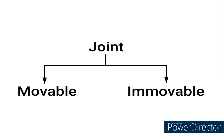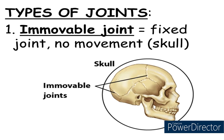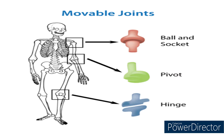Joints are of two kinds: immovable joints and movable joints. Immovable joints are joints where bones are held together tightly and cannot move. Most of the joints in the skull are immovable joints. Movable joints are the joints that allow movements of bones, and they are of four types.